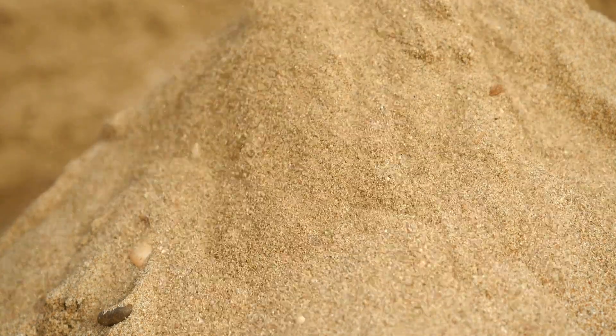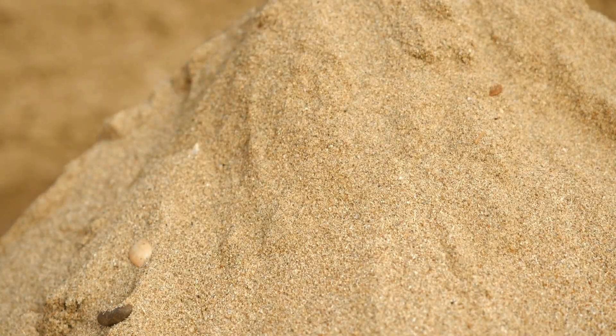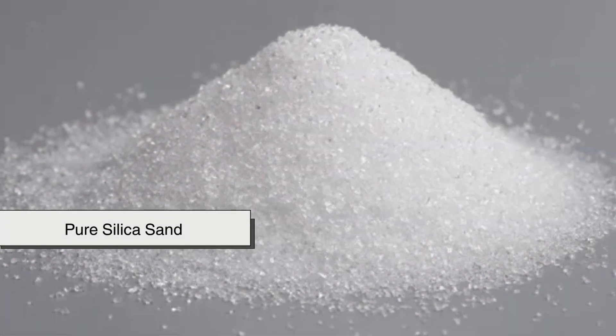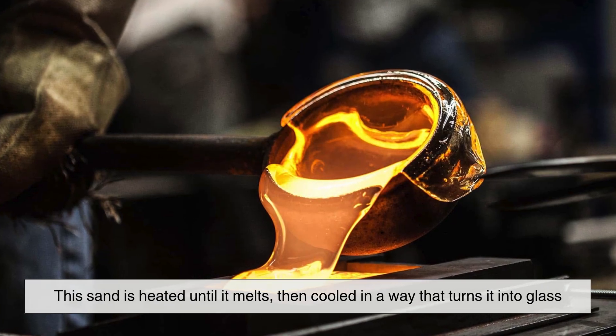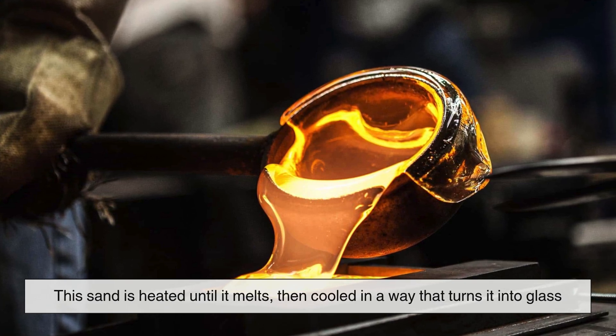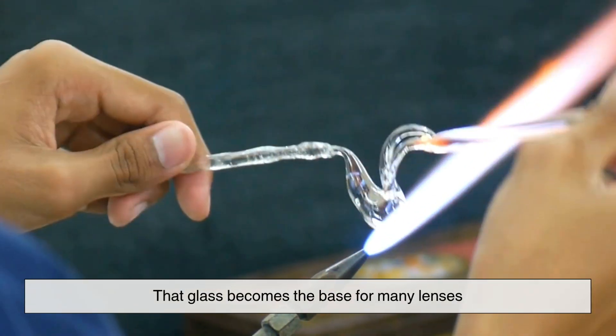Believe it or not, it all begins with something as simple as sand. Not just beach sand, but a special kind of pure silica sand. This sand is heated until it melts, then cooled in a way that turns it into glass. That glass becomes the base for many lenses.